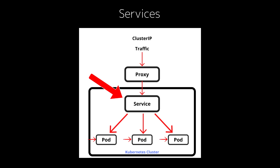The key thing here is that services provide stable endpoints for pods that may be dynamically created or destroyed. For example, imagine your app is running across several pods. If a user wants to access your app, you don't want them connecting to a specific pod because pods can be created or destroyed at any time. Instead, you create a service, which gives you a consistent IP address or DNS name. The service will automatically route traffic to the correct pod, even as pods come and go.